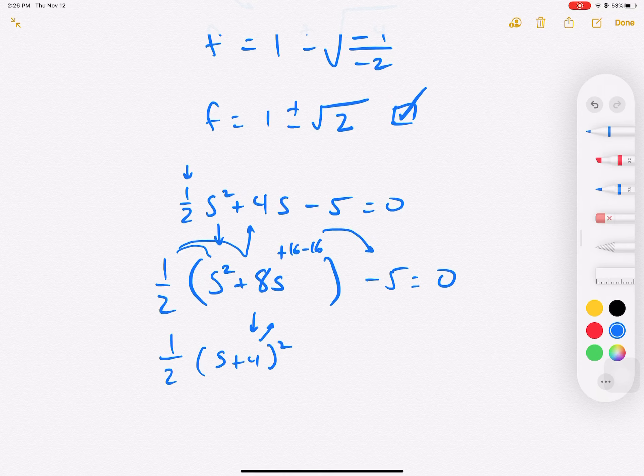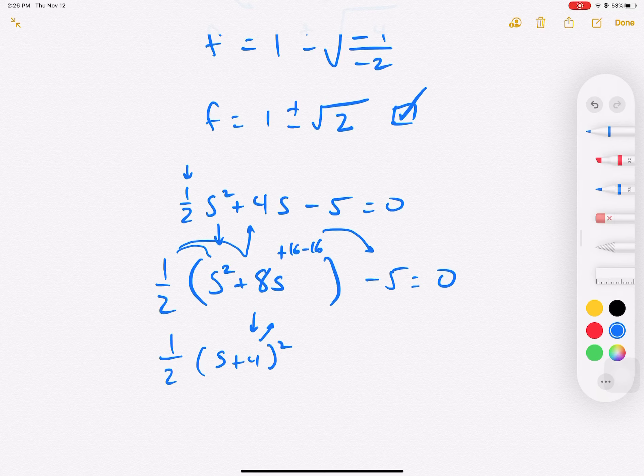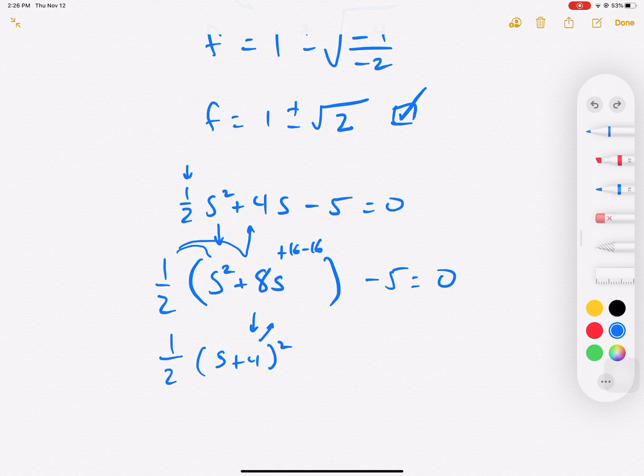We always combine the 16 and the 5, but we can't do that because we're stuck inside this house, inside this 1 half parentheses. So we multiply the 1 half by the 16 to kick it out. So 1 half times 16 is negative 8. Combine those together to be negative 13, equals 0.